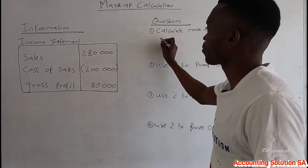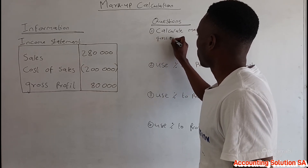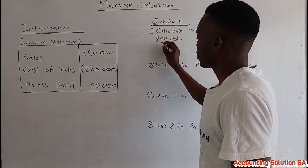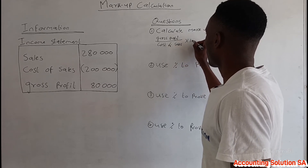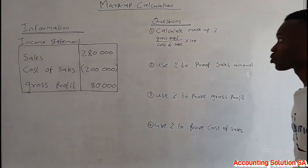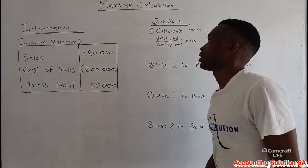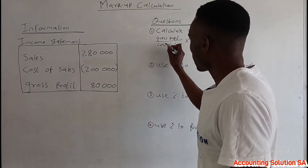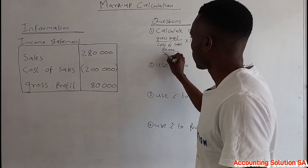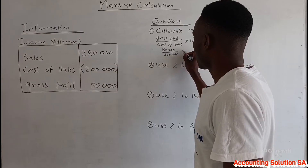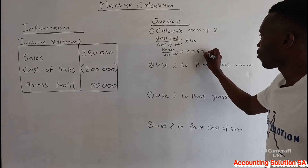When we calculate a markup we use the formula: gross profit divided by cost of sales, multiplied by 100. This formula gives us the markup percentage. So if you have a gross profit of 80,000 and you divide it by 200,000 and multiply by 100, you are going to get a markup of 40 percent.